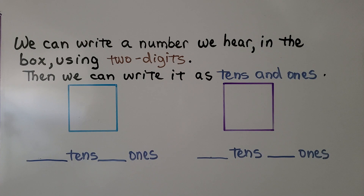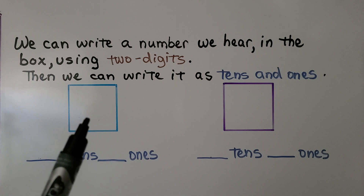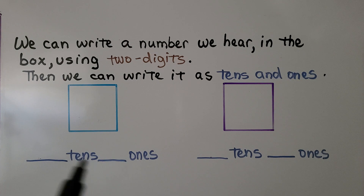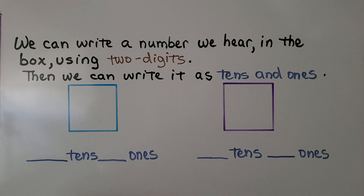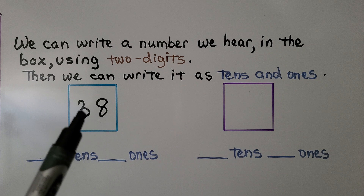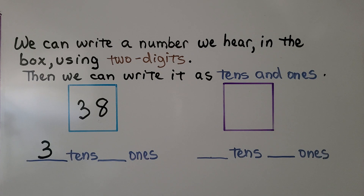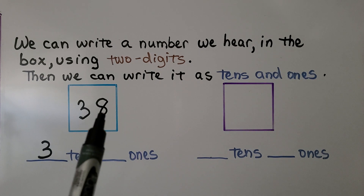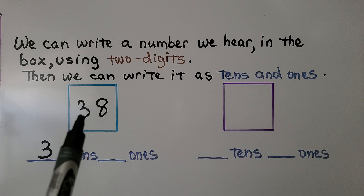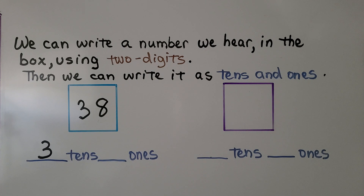We can write a number we hear in the box using two digits, then write it as tens and ones. If I said the number 38, we can write 38 in the box. 38 is three tens and eight ones — there's a 3 in the tens place and an 8 in the ones place.